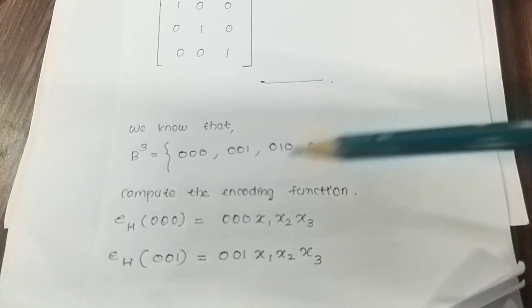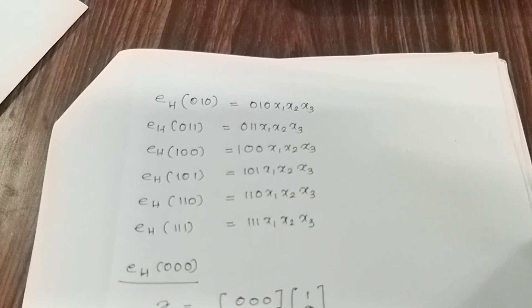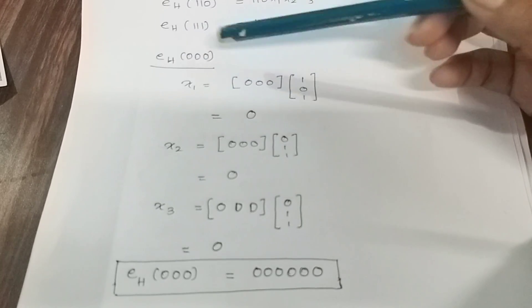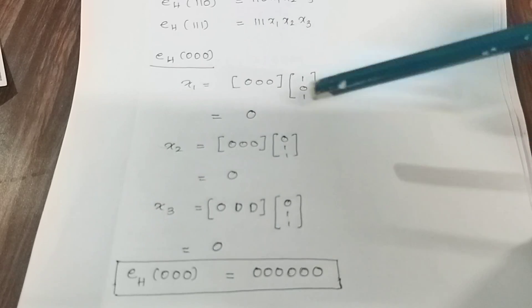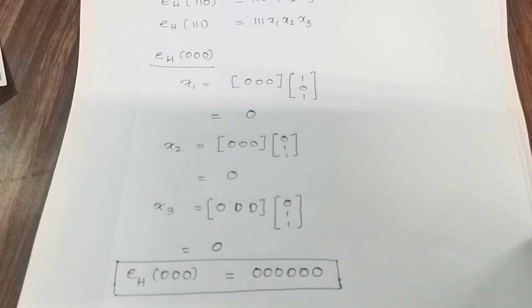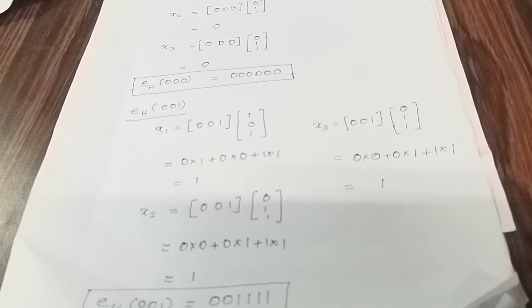There are 3 input positions. We will read all the elements and compute the encoding function for each of the 8 elements. We compute 3 check positions for each of the 8 input elements x1, x2, x3. The answer for EH(001) is 0, 0, 1, 1, 1, 1.